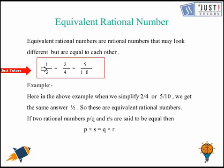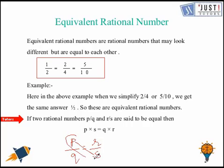So we can convert a given rational number to the other one by simplifying, that is by dividing, or by multiplying. And if any two rational numbers are equal or are equivalent, which are in form p over q and r over s, then p multiplied by s is same as q multiplied by r. That is a rule in equivalent rational numbers.